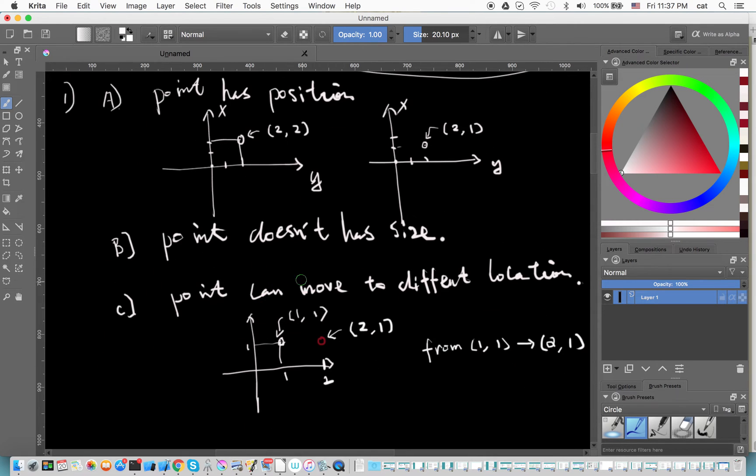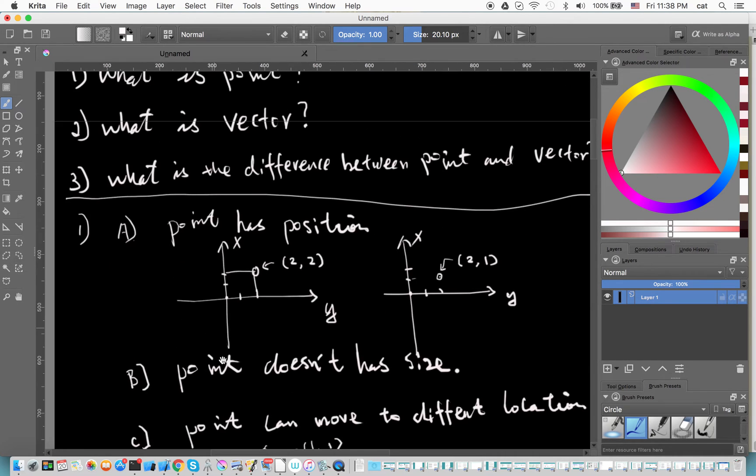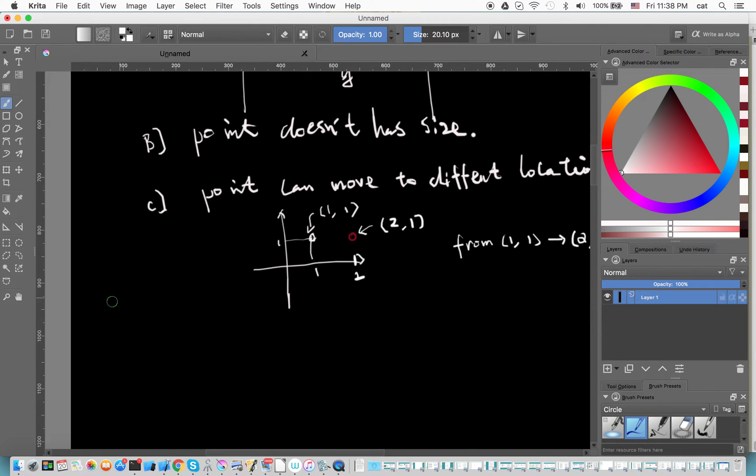So this is the point. This is the definition of the point. Point has position, point doesn't have size, and point can move to different location. Okay, let's talk about vector.